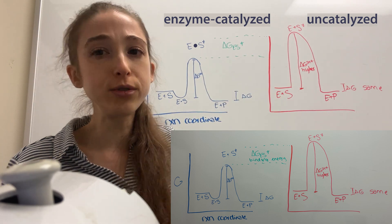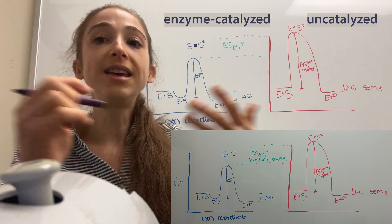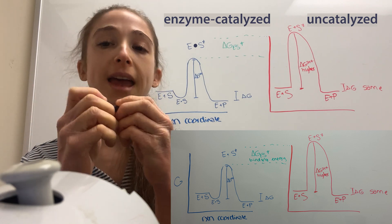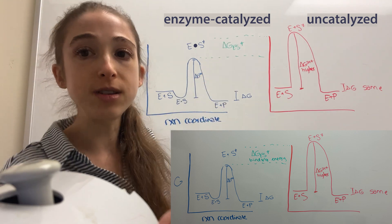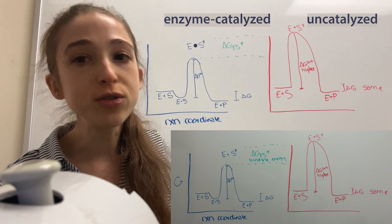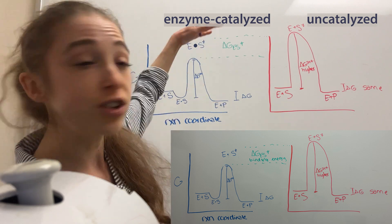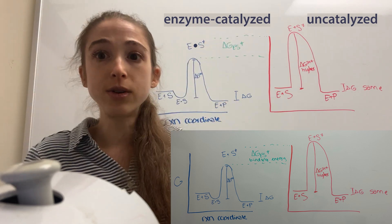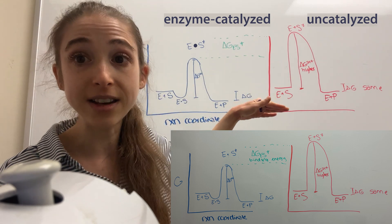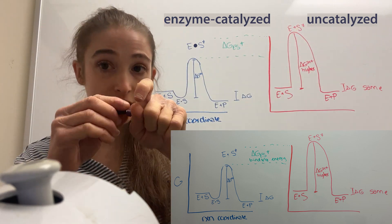The activation barrier is what's going to determine how fast a reaction happens. It's the difference between having our crayon be just the substrate and having that crayon be partway broken — that's our activation barrier. Sometimes enzymes will have multi-steps and things will be more complicated, but basically the largest change in free energy is going to be the rate-determining step — the slowest step. If we want to make that energy difference lower, we do that by forming favorable interactions with the transition state.